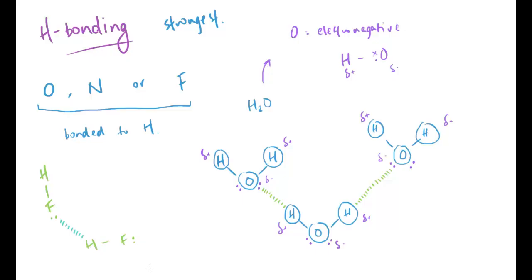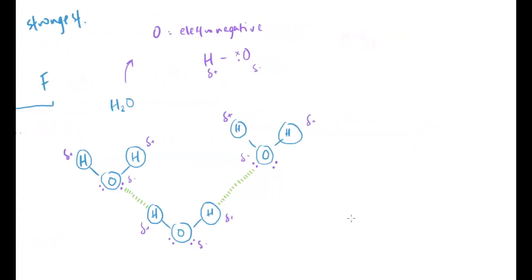In terms of application, one common exam question involves water and hydrogen bonding in relation to ice. Icebergs float — ice is less dense than liquid water. When a pond freezes, the top freezes and the water underneath remains warmer, allowing life to survive underneath. The reason for this is all down to hydrogen bonding: in the solid form of water, there are more hydrogen bonds, and these bonds have a very set length.